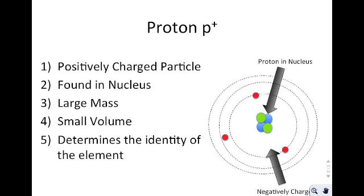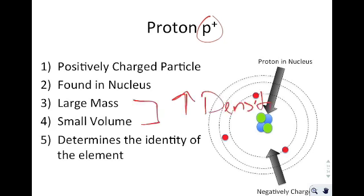We're going to go through the model of the atom in a little more detail. You have the proton — a lot of times signified by P⁺. They're the positively charged particle. They're found in the nucleus. They have a large mass relatively speaking and a very small volume, so they have an extremely large density. They determine the identity of an element. If you have two protons, you're helium — it doesn't matter anything else about the atom. If you have two protons, you're helium. If you don't have two protons, you are not helium.